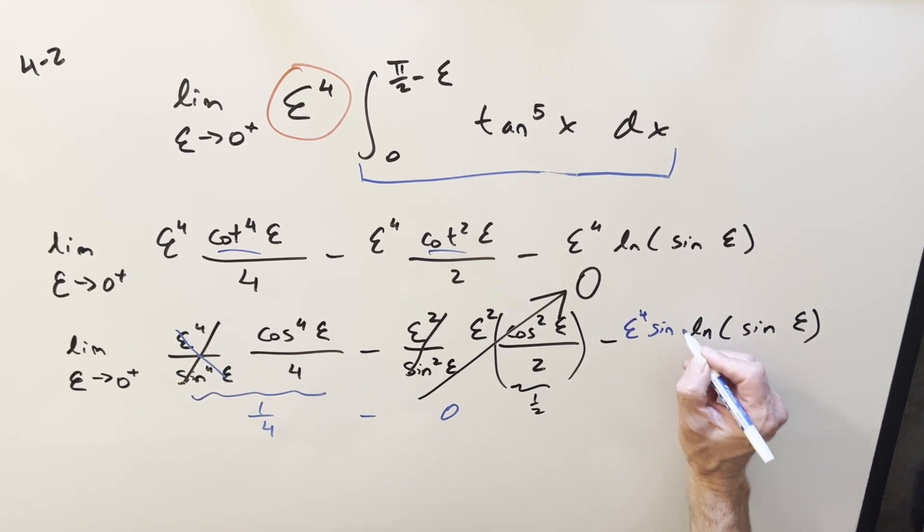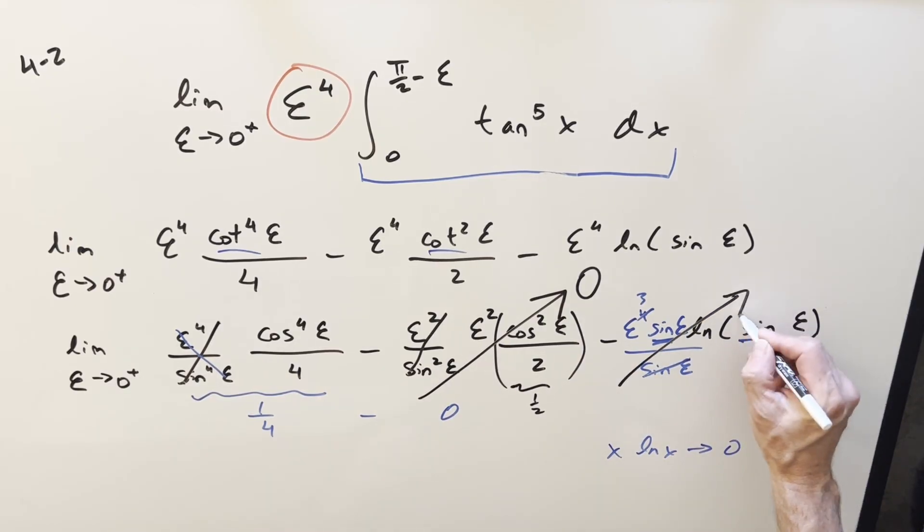And now we have exactly that situation like we had right here where this thing is going to be going off to zero. So however you do it, this piece is going to zero. So all we're left with is this piece right here. And so for my final solution, we just get one fourth and that's it.